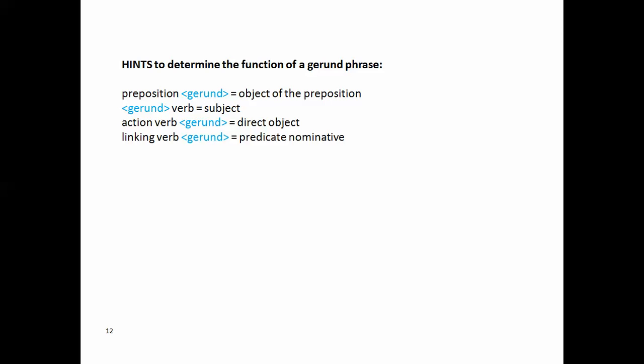Here are some hints to determine the function of a gerund phrase. Because after you find it, you must decide, is it being used as the subject, the direct object, or what is it? Well, it's pretty simple. Look at where it is in the sentence. If there is a preposition right in front of it, then most likely this gerund is the object of the preposition. If you don't find that scenario there, then check the verb. If it's in front of the verb, it's the subject most likely. If it follows an action verb, it's the direct object. If it follows a linking verb, it's going to be a predicate nominative. So, if you follow these hints, it's very easy to determine the function of the gerund phrase.